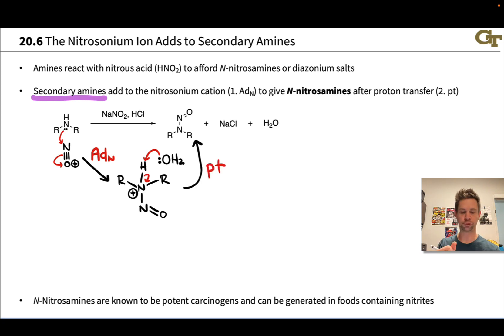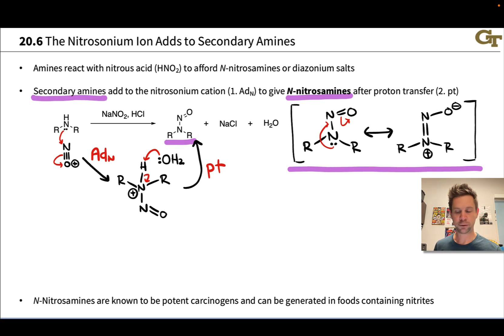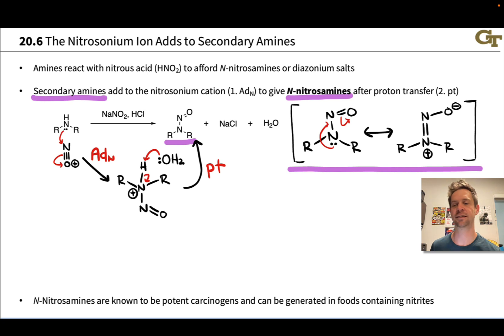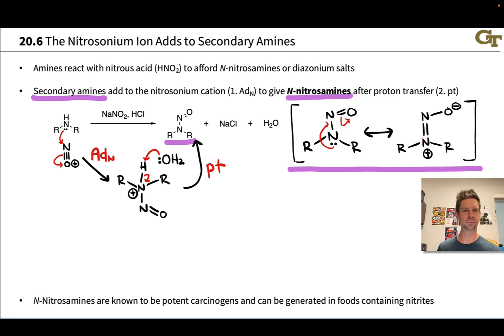Nitrosamines have an alternative resonance form: the nitrogen lone pair can push into a pi bond with the adjacent nitrogen, pushing the N=O electrons onto oxygen, showing that this oxygen is nucleophilic — it can potentially be alkylated or acylated. This also shows that the other nitrogen is potentially electrophilic, meaning a nucleophile could add there. Nitrosamines can do some interesting things, and this alternative resonance form of the nitrosamine is worth keeping in mind.